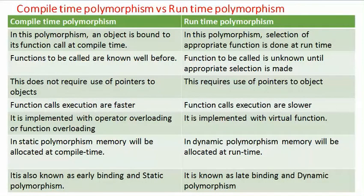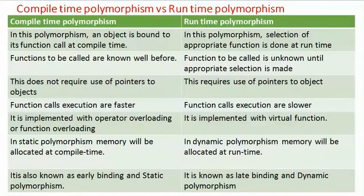In compile-time polymorphism, the object is bound to the function call at compile time, and functions to be called are known well before execution. In runtime polymorphism, selection of the appropriate function is done at runtime and is unknown until the selection is made. Compile-time polymorphism does not require the use of pointers to objects, whereas runtime polymorphism does. Function call execution is faster in compile-time and slower in runtime polymorphism.